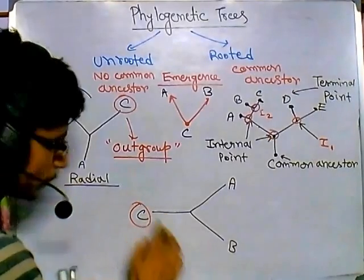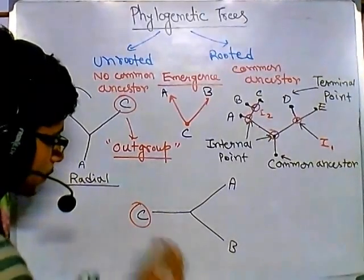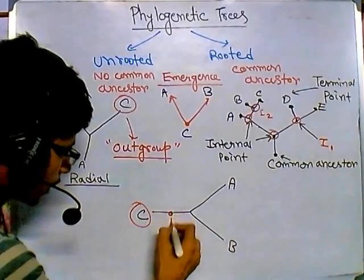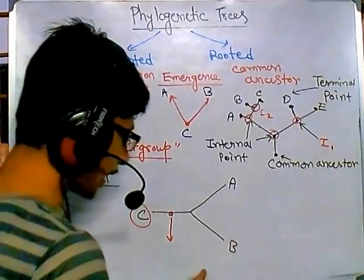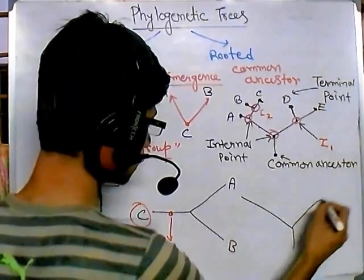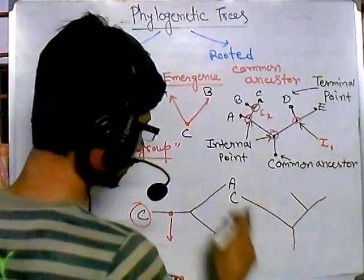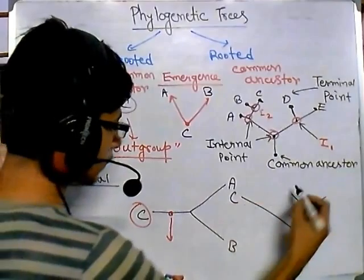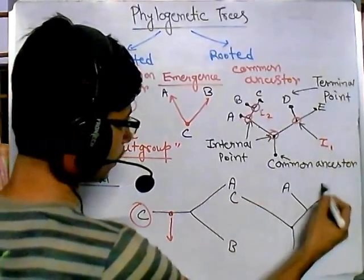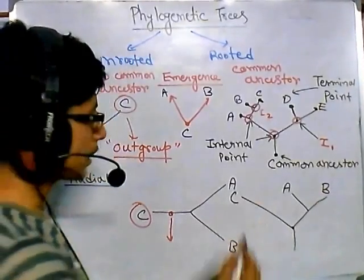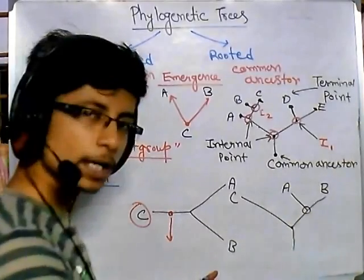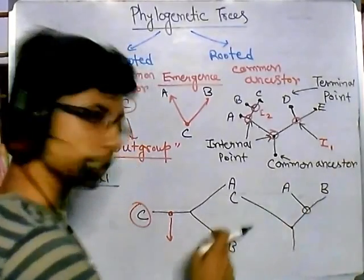If we imagine C as the outgroup, branching occurs from that point because it developed earlier during evolution. If we take that point and drag it down, it will show C coming first — earlier in evolution — and then A and B branching from a common ancestor. This means A and B are more closely related to each other than either is to C.